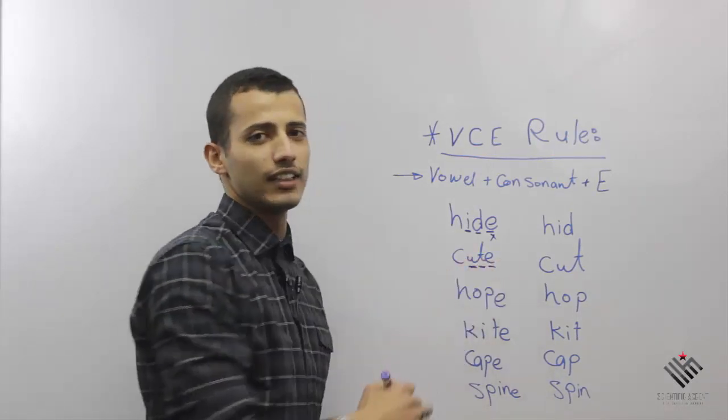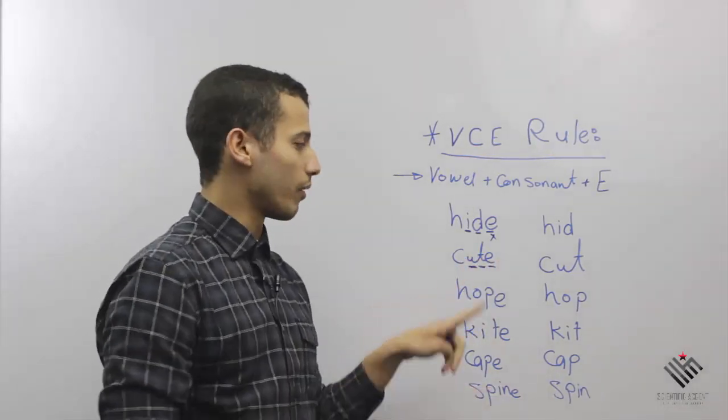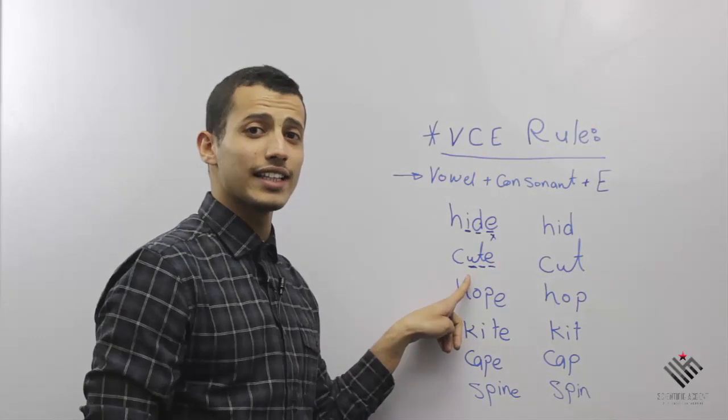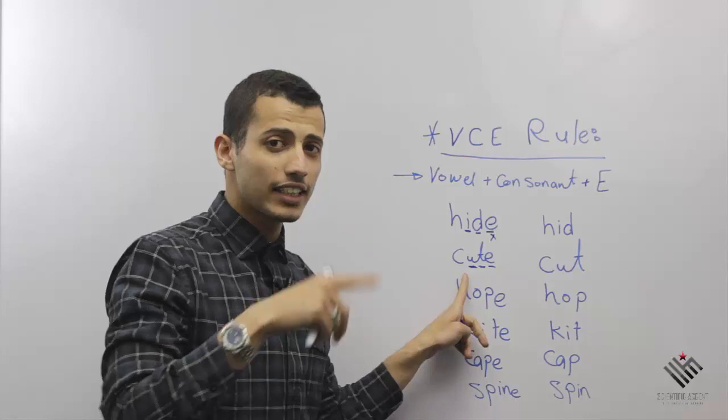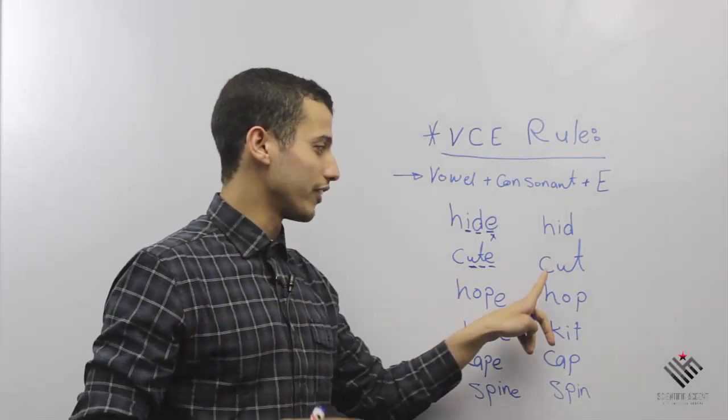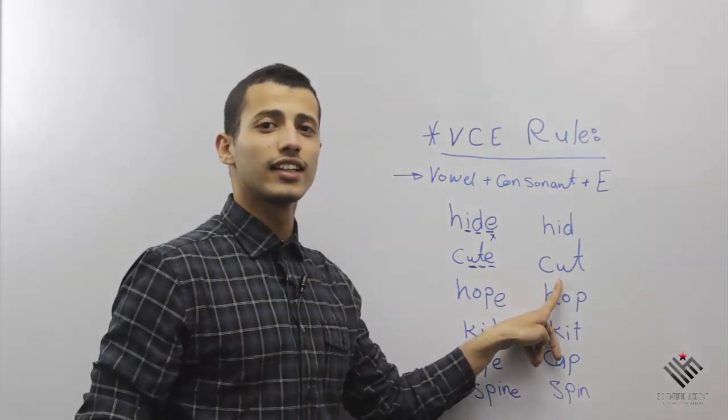This word here, it ends with a vowel and then consonant and then E. Can you see this pattern? So I'm going to pronounce this vowel as a letter in the alphabet, which is U, so I'm going to say 'cute.' Got that? And this word without the E here is 'cut.'